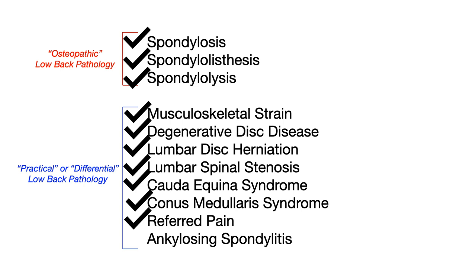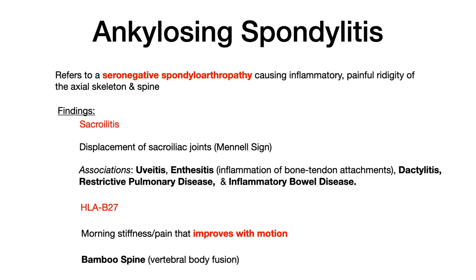Let's conclude by talking about ankylosing spondylitis, which is very high yield for COMLEX because of its many associations. Ankylosing spondylitis refers to a seronegative spondyloarthropathy that causes inflammatory painful rigidity of the axial skeleton and spine. Findings include sacroiliitis and displacement of the sacroiliac joints referred to as the Menell sign. There are many extra-articular associations: anterior uveitis, enthesitis — inflammation where bones and tendons attach — dactylitis, restrictive pulmonary disease, and inflammatory bowel disease.